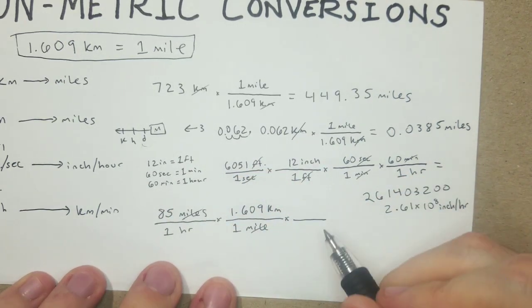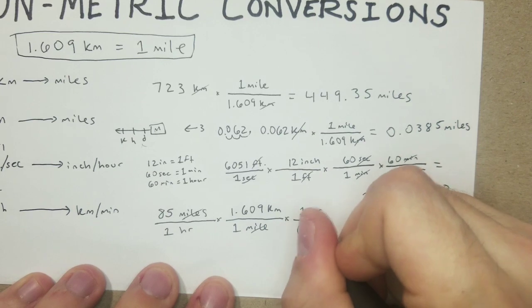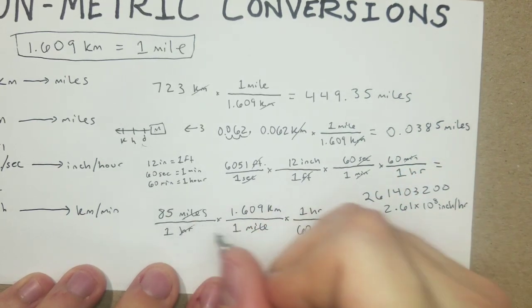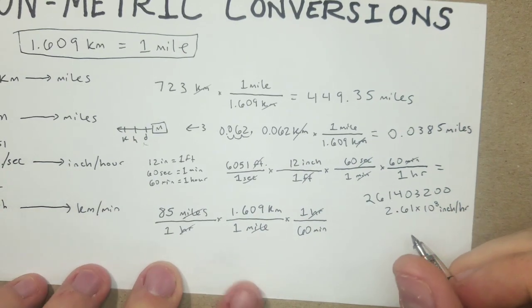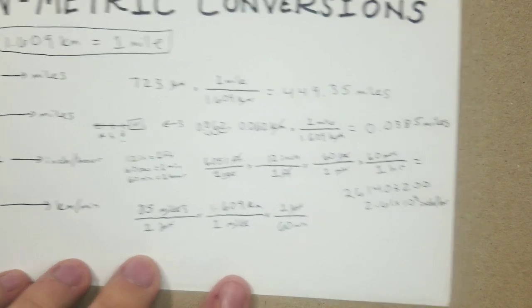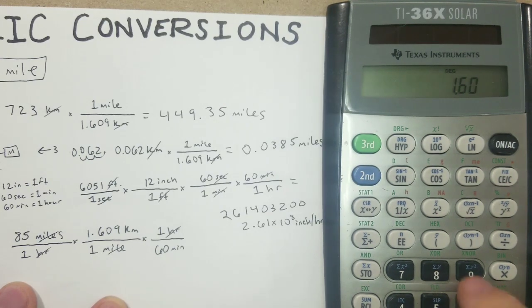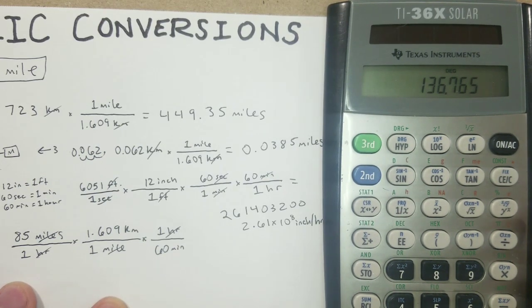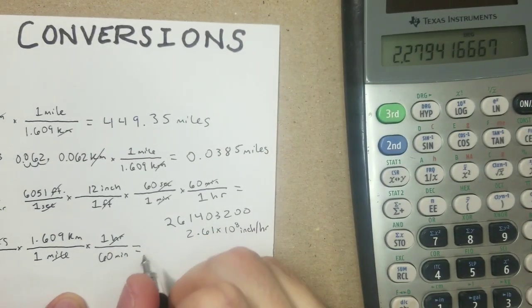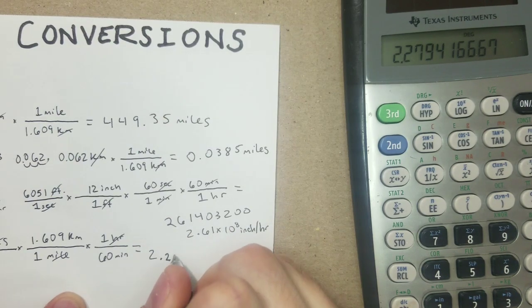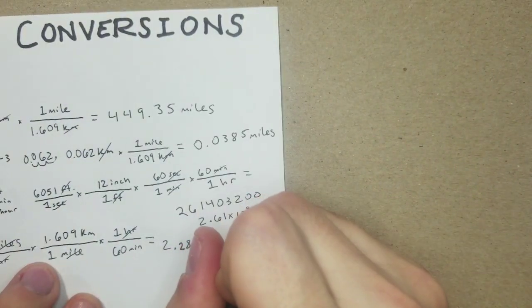Next step, we're going to want to get rid of hours and get into minutes. We know that one hour has 60 minutes. Hours cancel. Now we have kilometers over minutes, which is exactly what we're asking for. So now we can just throw this into the calculator: 85 times 1.609 divided by 60 equals 2.28 kilometers per minute.